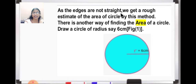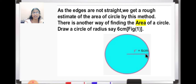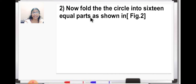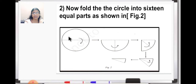As the edges are not straight — when we used graph paper counting the squares, the edges were not straight — so we get a rough estimate of the area of circle by that method. So there is another way of finding the area of a circle. You will draw a circle of radius — here for example 6 centimeter is taken as a radius. Now fold the circle into 16 equal parts. This is the way you are going to fold it — this is the first fold, then again this fold you will divide into 2, this again 2. When you open it, it should be 16 equal parts.